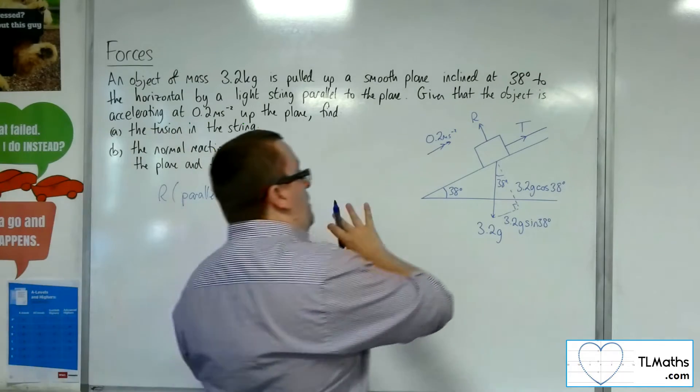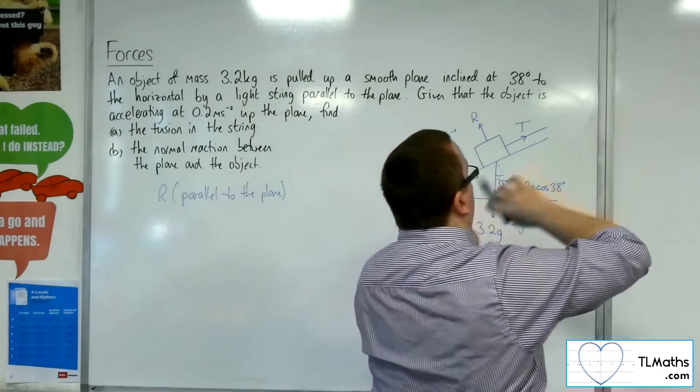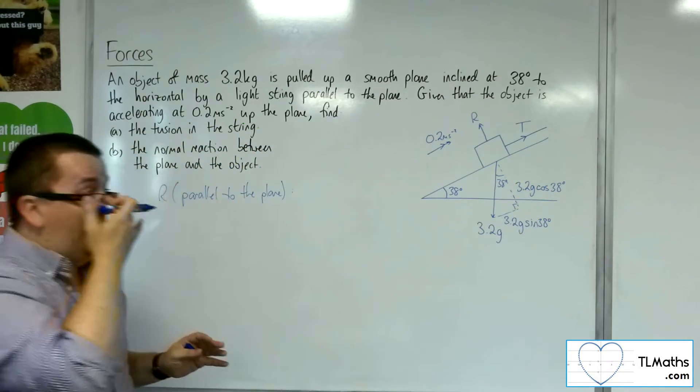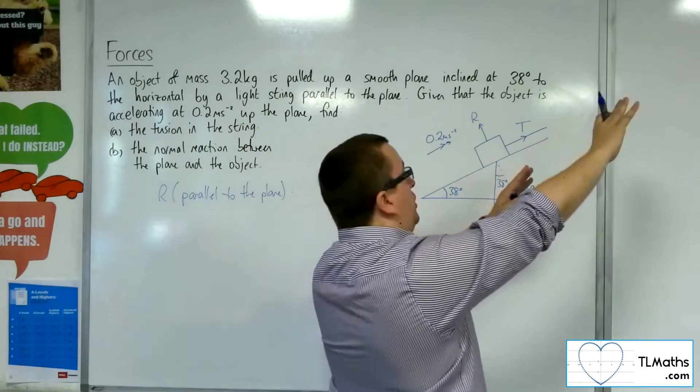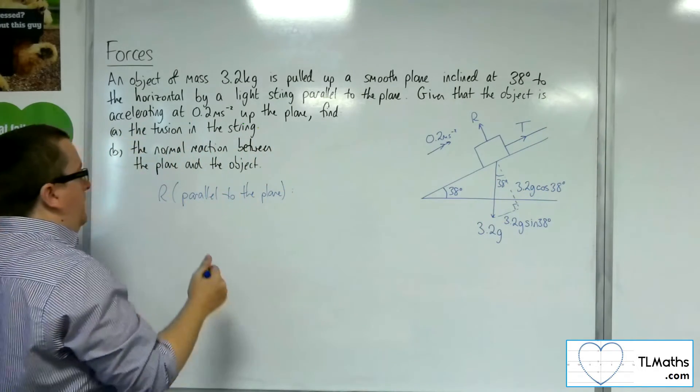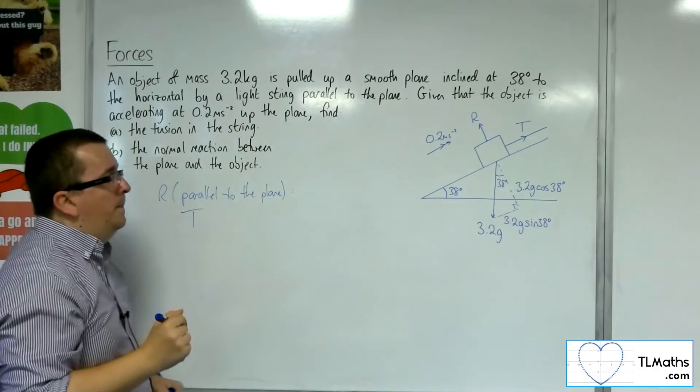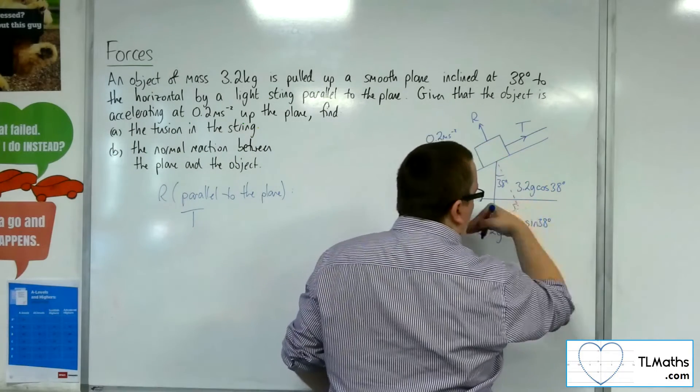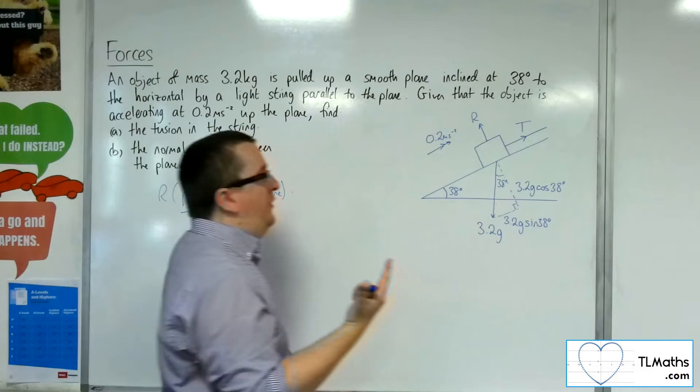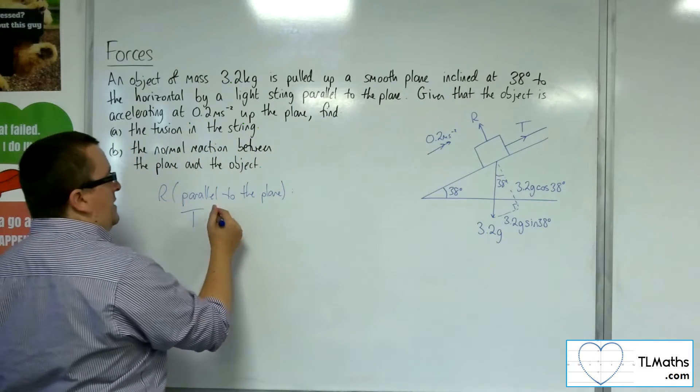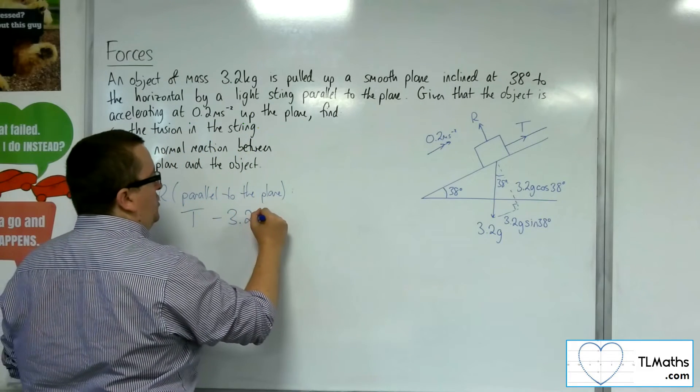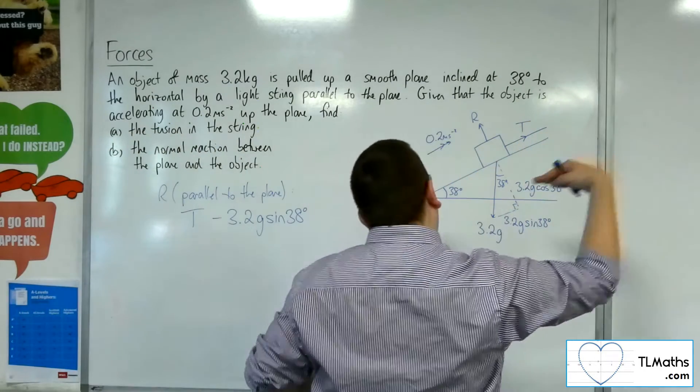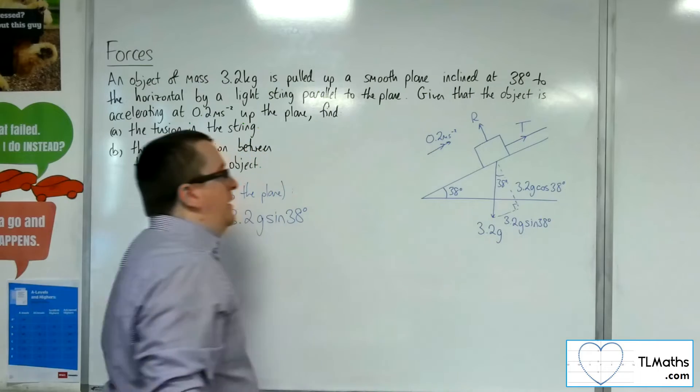If we look at parallel to the plane, we've got the tension and we're going to take upwards, up the plane as positive. We've got the tension working up the plane, so we've got T. What we've got working against it is the gravity, that component of the weight, the 3.2g sine 38. So take away 3.2g sine 38.